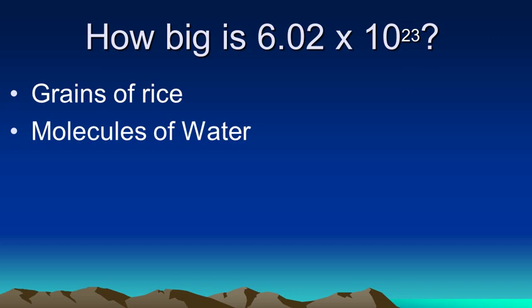If we talked about 602 sextillion molecules of water, that would not be very much water. In fact, that would be about two-thirds of an ounce of water, so not very much at all. Hopefully that helps us realize how big Avogadro's number is — it's a very large number, but it also helps us realize that a molecule or an atom of something is very, very tiny.